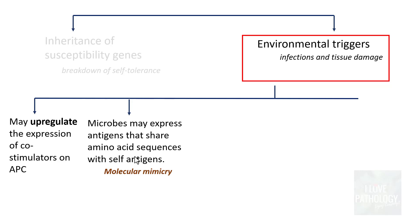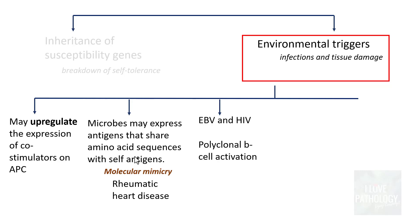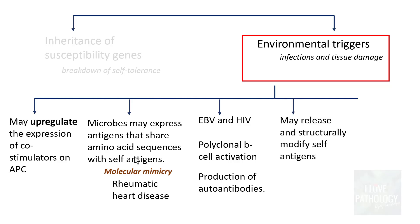The most common example of molecular mimicry is rheumatic heart disease, where streptococcal antigens share amino acid sequences with cardiac muscle antigens — which is why streptococcal infection can lead to rheumatic heart disease. Third, viruses such as Epstein-Barr virus and HIV can cause polyclonal B cell activation, leading to production of various autoantibodies. Fourth, infections may release and structurally modify self-antigens, resulting in the development of neoantigens, against which autoimmunity can develop.